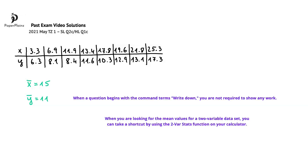The second tip is that when you're looking for the mean values for a two-variable dataset, you can take a shortcut by using the two-var stats function on your calculator.